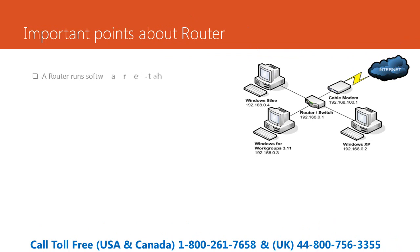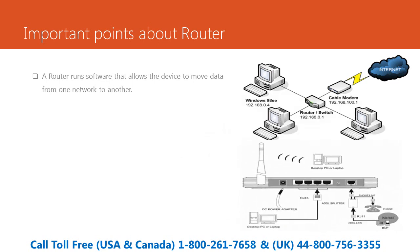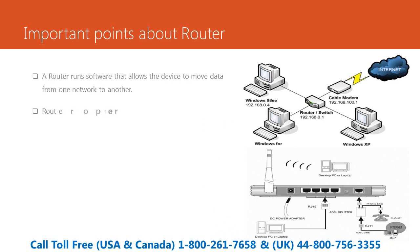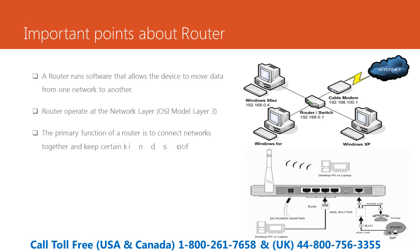A router runs software that allows the device to move data from one network to another. Routers operate at the network layer — OSI model layer 3. The primary function of a router is to connect networks together and keep certain kinds of broadcast traffic under control. There are several companies that make routers, including Cisco, Linksys, Netgear, and Belkin.